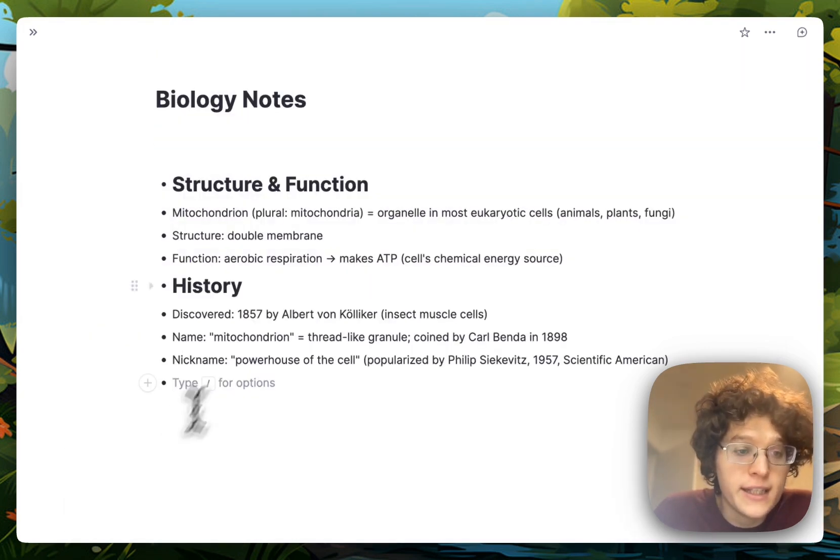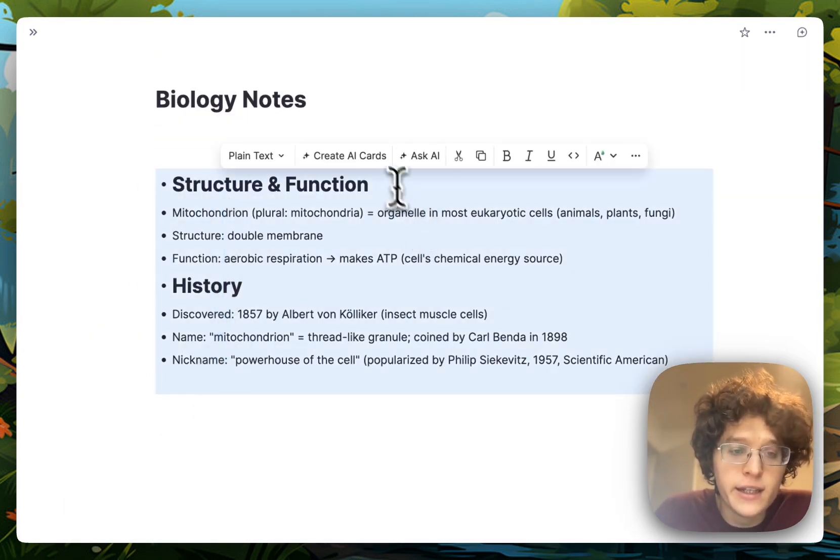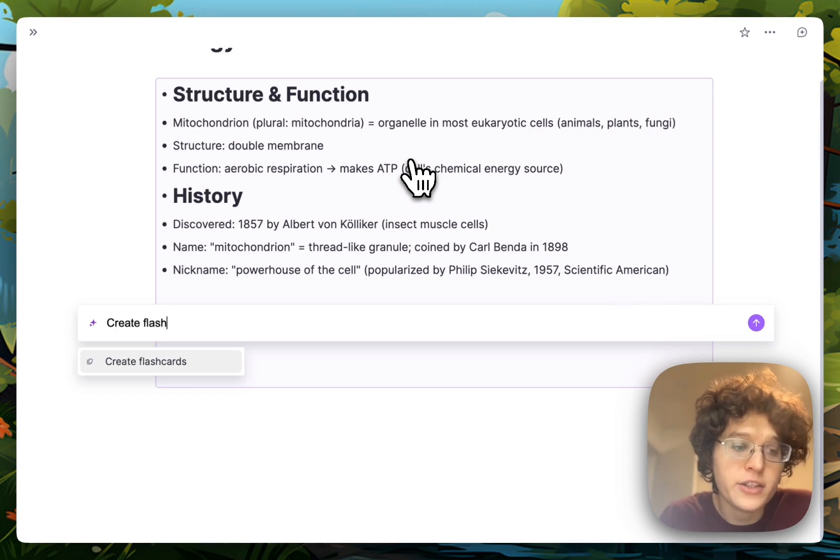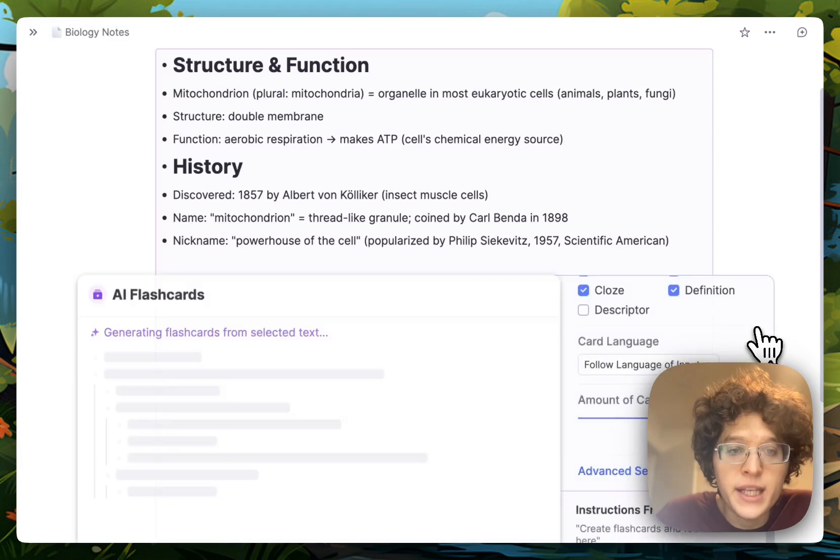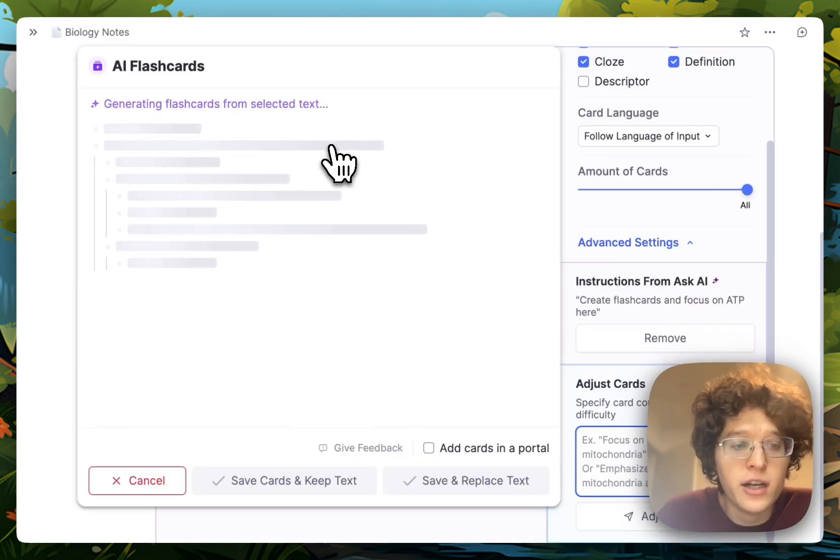You can use this however you want, and you can ask it anything. For example, I could ask it to go create flashcards for me, and maybe I want it to be focused on ATP here, so if I just write that and press send, we can see that the AI flashcards automatically opens here, and it begins writing them for me.